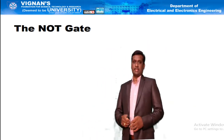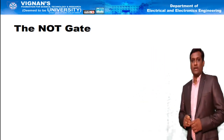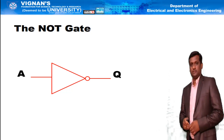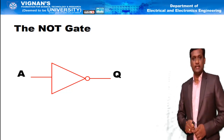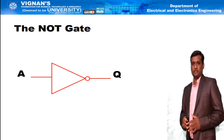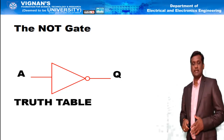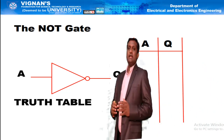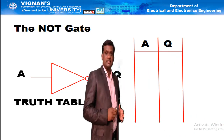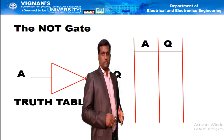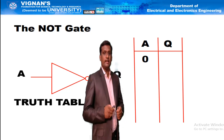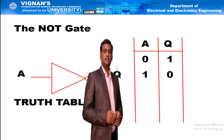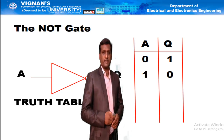The next gate is NOT gate. This NOT gate is also called an inverter gate or complementary gate. It is a single-input gate. The single input is A, and its complement is the output Q. Because of a single input, we have only two combinations. When input is low, its complement is high, so output is high. When input is high, the output is low. That is what is called the NOT operation of the gate.